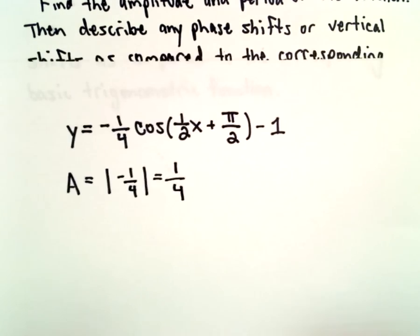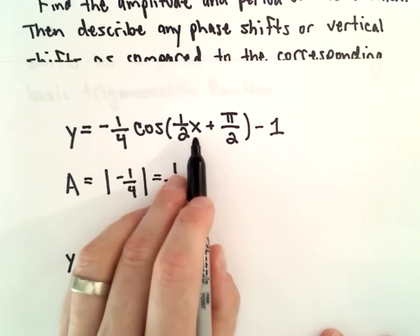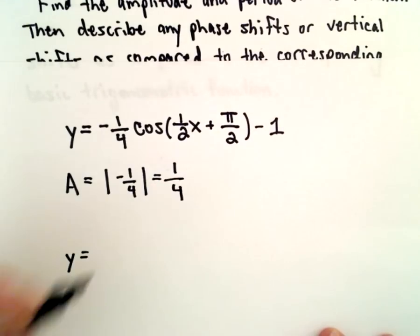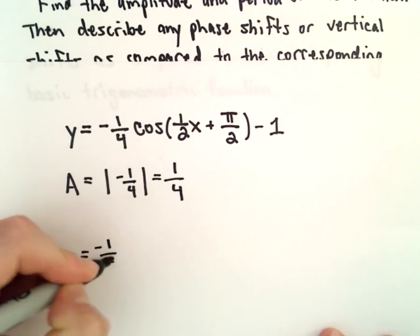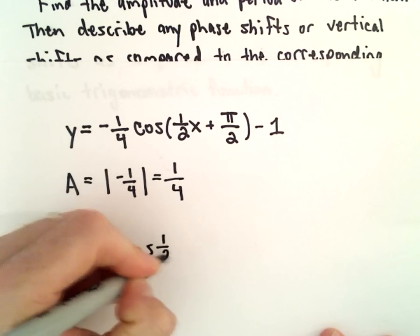Now to get the period, we're actually going to have to rewrite this a little bit. Inside the parentheses, we want the coefficient on the x to be a positive one. So what we can do is simply factor the one-half out.